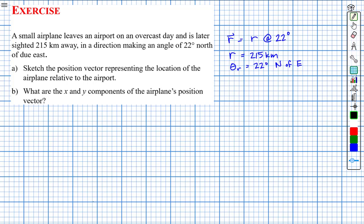Our rectangular coordinate system will have an x-axis which will be horizontal. The scale will be in kilometers, and we'll have a y-axis which will be vertical, with units also in kilometers.